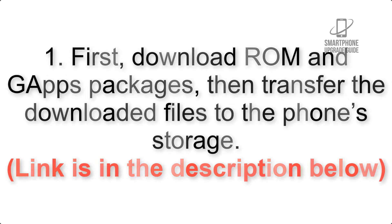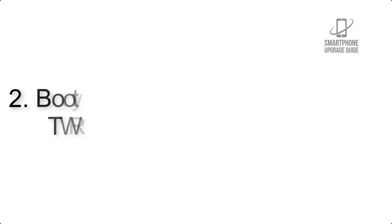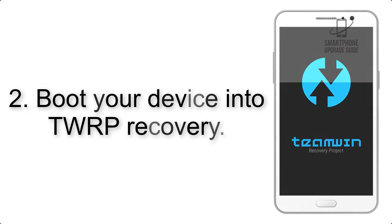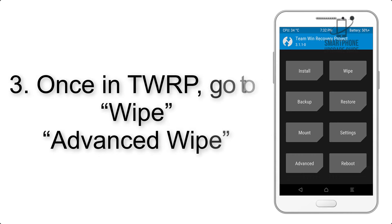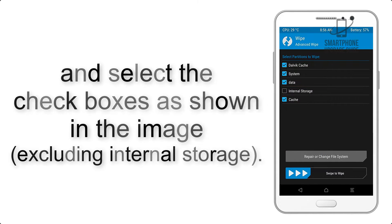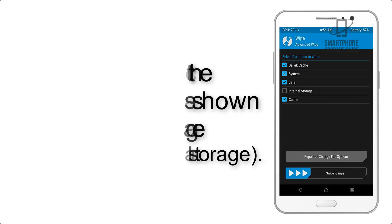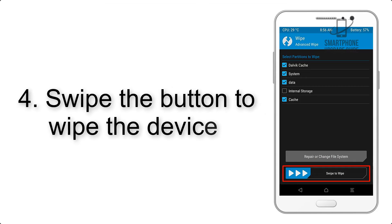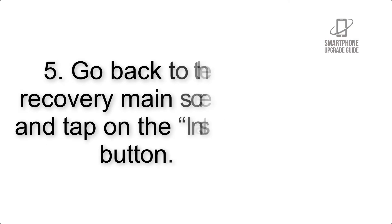The download link is in the description below. Step 2: boot your device into TWRP recovery. Once in TWRP, click on Wipe, then Advanced Wipe, and select the checkboxes as shown in the image, excluding internal storage. Step 4: swipe the button to wipe the device.